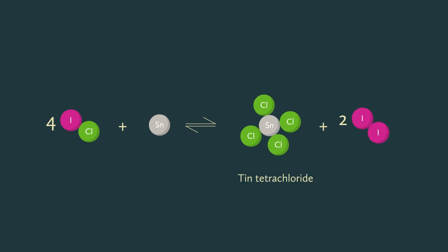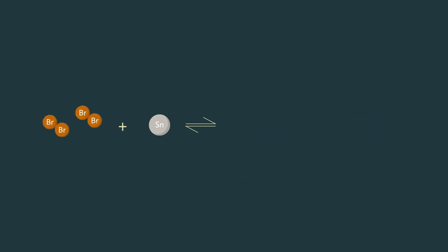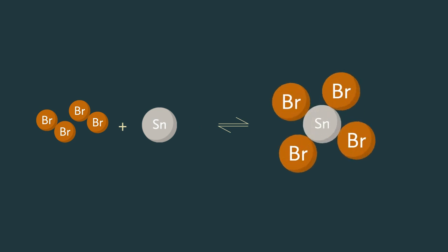while the displaced iodine atoms pair up to become diatomic purple iodine vapour. In contrast with bromine, the test tube will become colourless as all the bromine reacts with the tin to form the colourless liquid tin bromide.